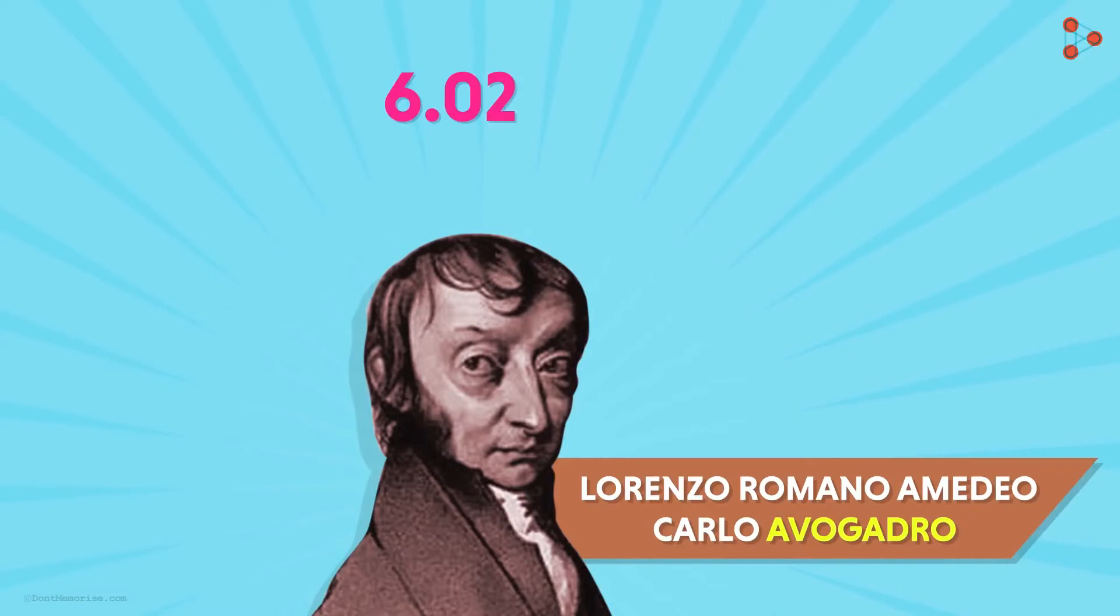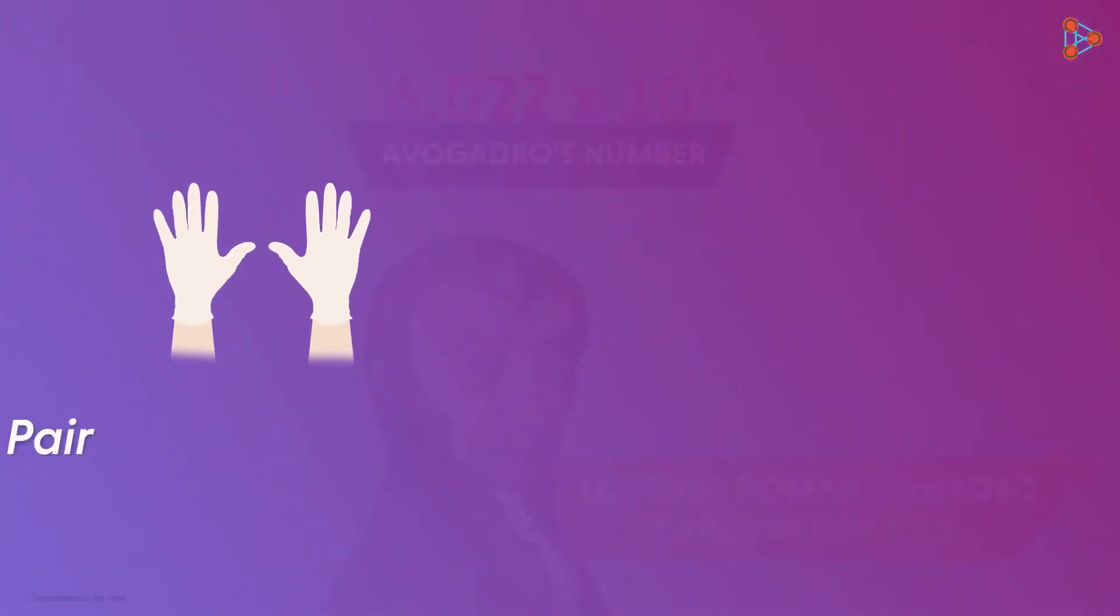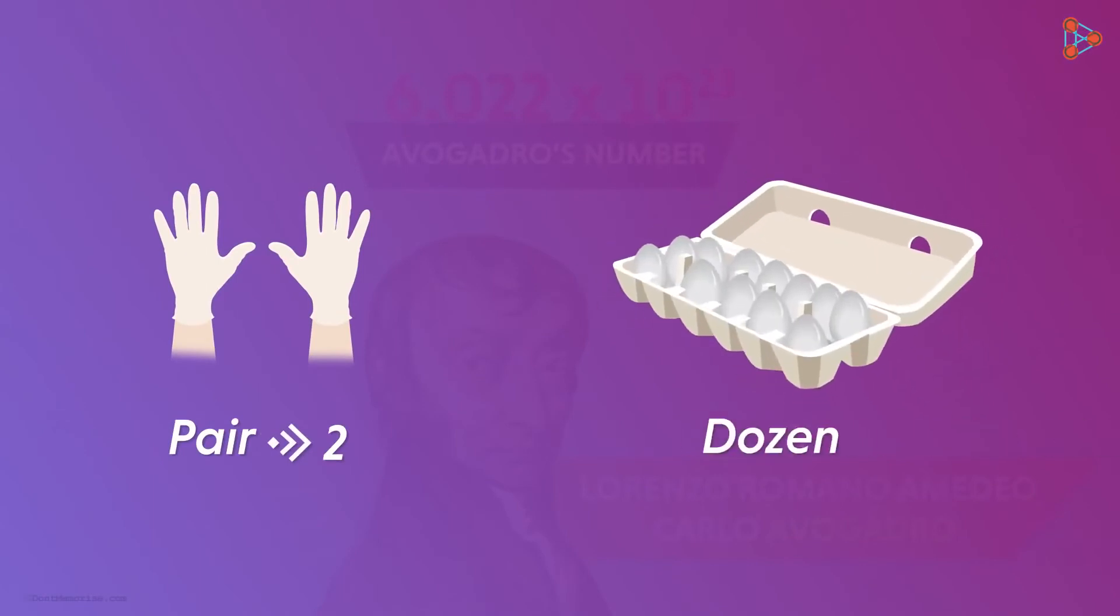So the number 6.022 times 10 raised to 23 is called Avogadro's number. It is just a number used to represent quantities. It's similar to how we use the word pair for 2 or the word dozen to represent 12.